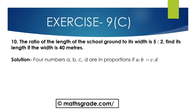Question number 10: The ratio of the length of the school ground to its width is 5 is to 2. Length to width is given as 5 is to 2. Find its length if the width is 40 meters.